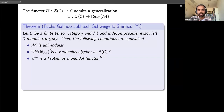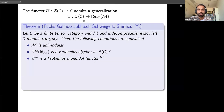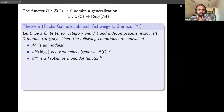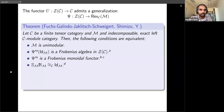Frobenius monoidal functors are nice because they carry Frobenius algebras to Frobenius algebras — so whenever you have a Frobenius algebra in the endofunctor category, you can apply the right adjoint to get another Frobenius algebra in the Drinfeld center. This is equivalent to unimodularity. Additionally, unimodularity can be characterized in terms of certain endofunctors of the module category — the Serre functor and the Nakayama functor — whose composition being equal to identity gives that M is unimodular.